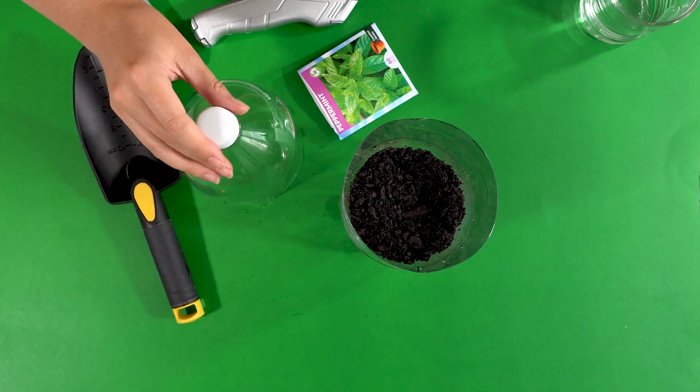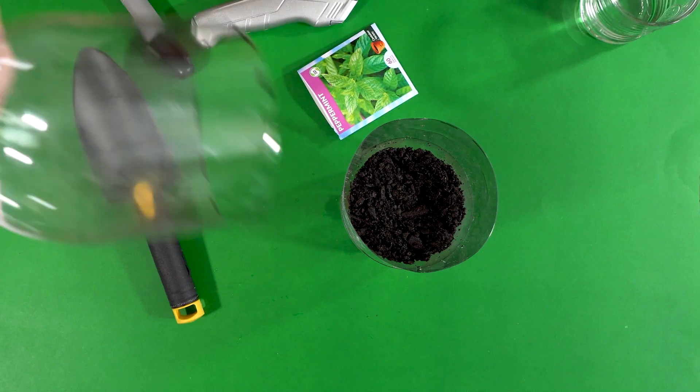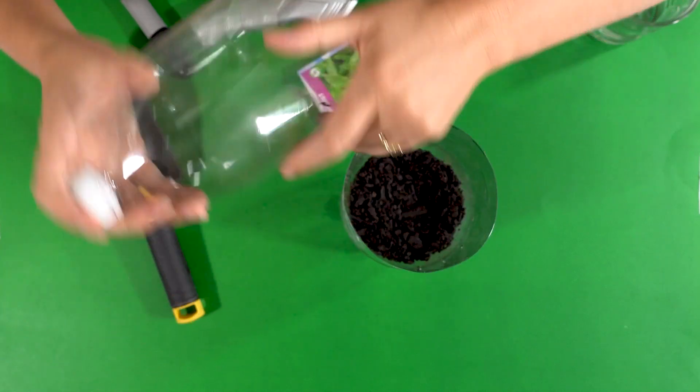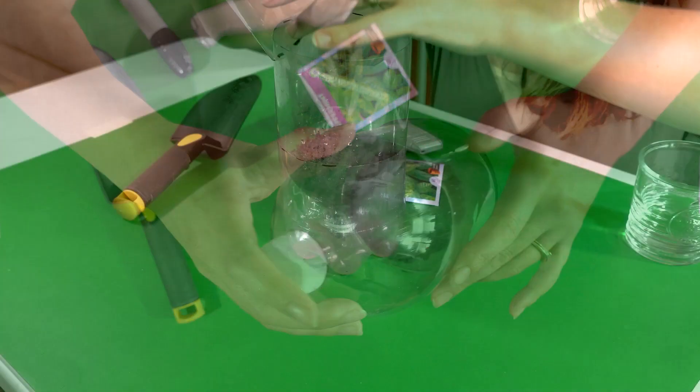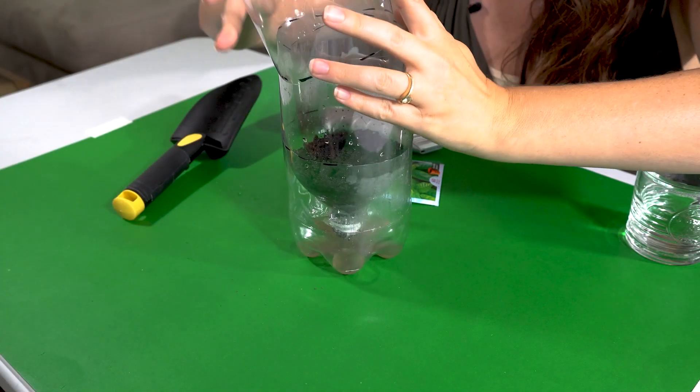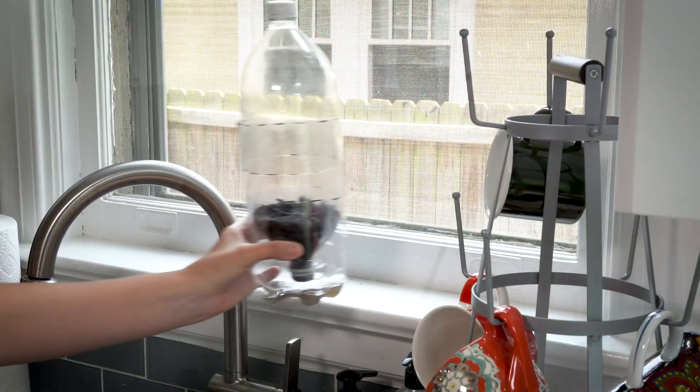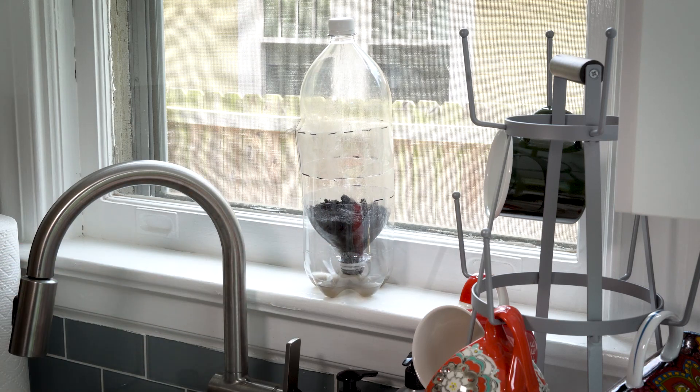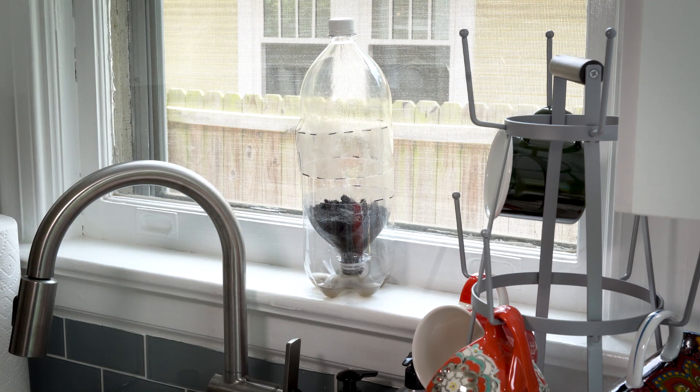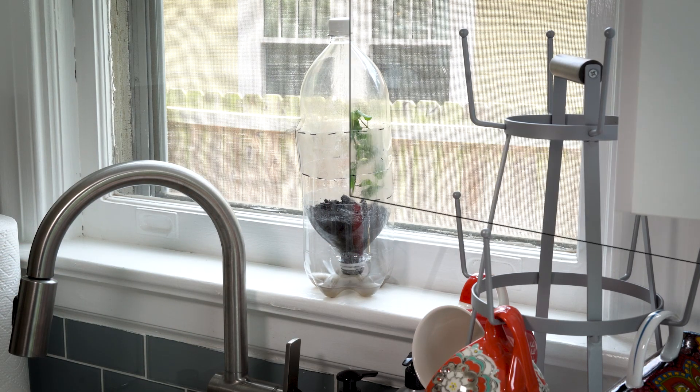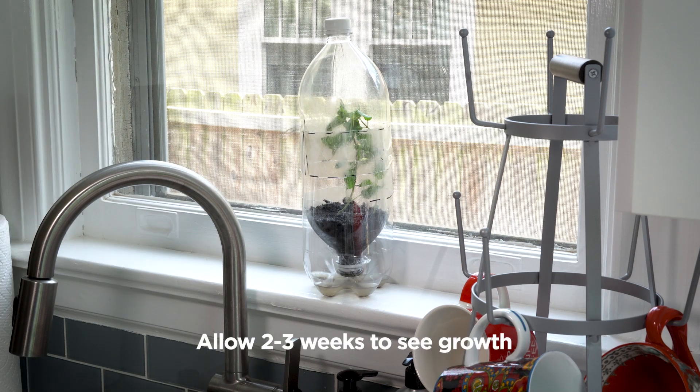For our final step we will put the lid that we cut with the slit on top of our mini greenhouse. This operates much like a real greenhouse. It will help to trap heat inside of your bottle and create a nice moist warm environment for your seeds to thrive.